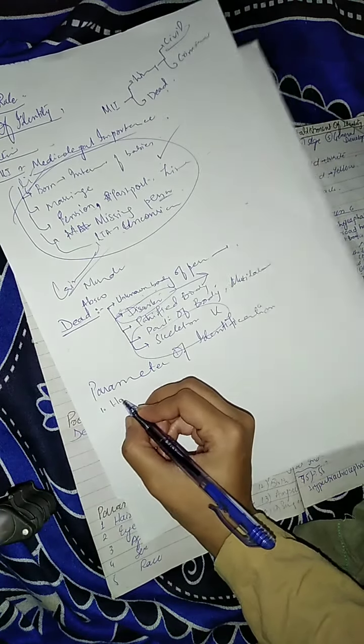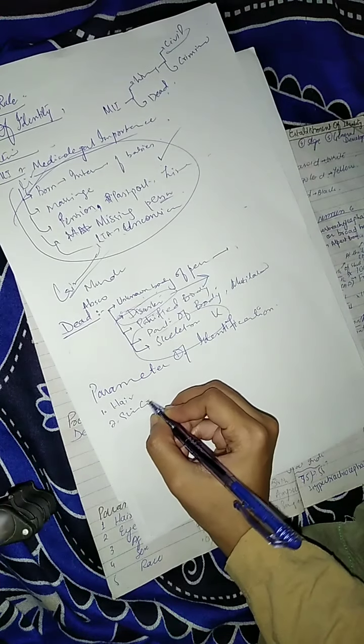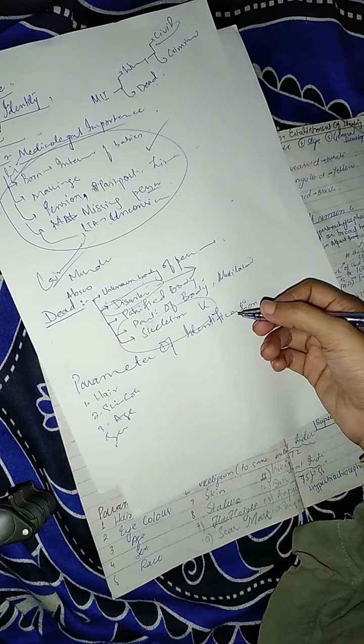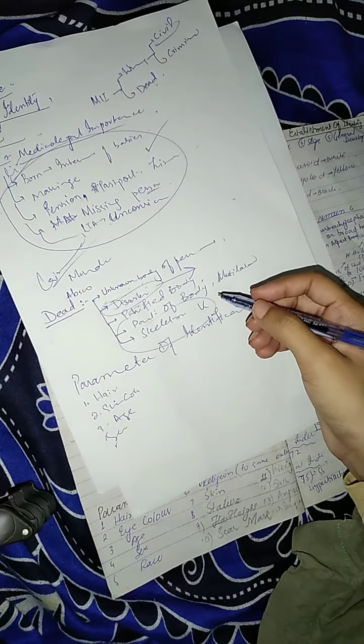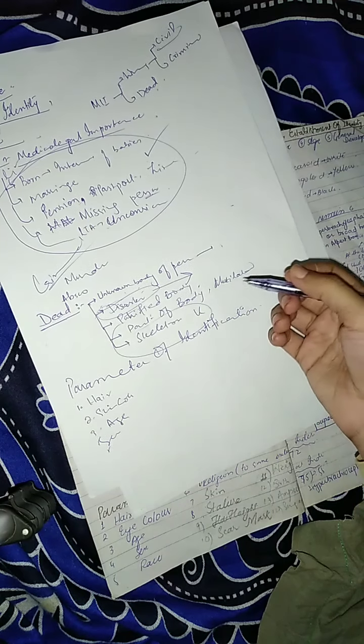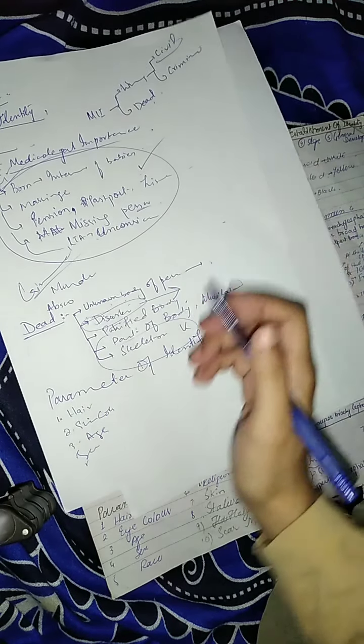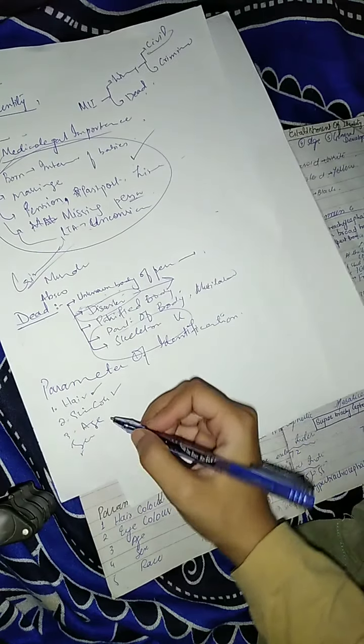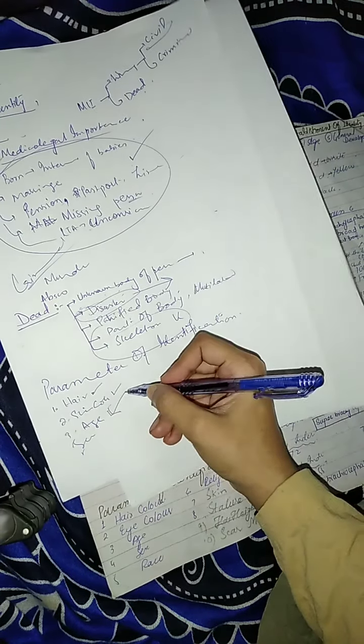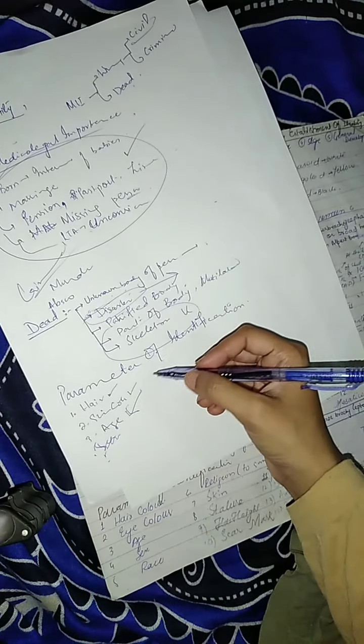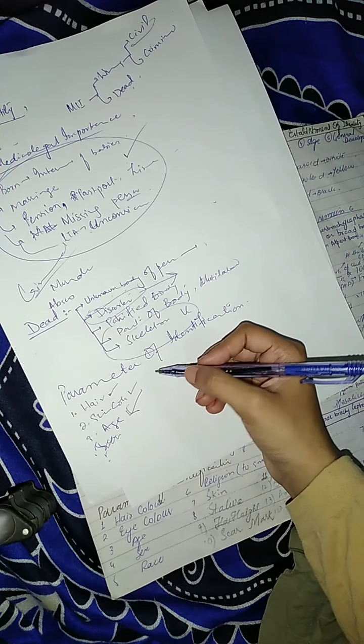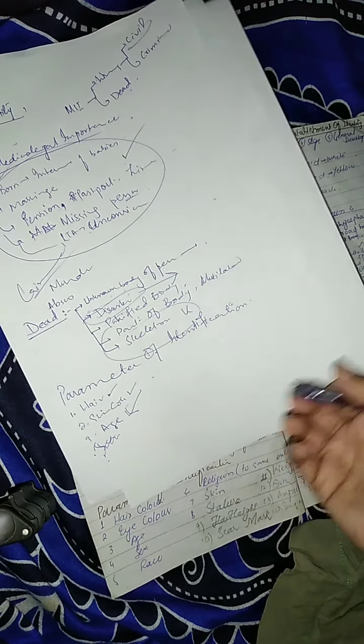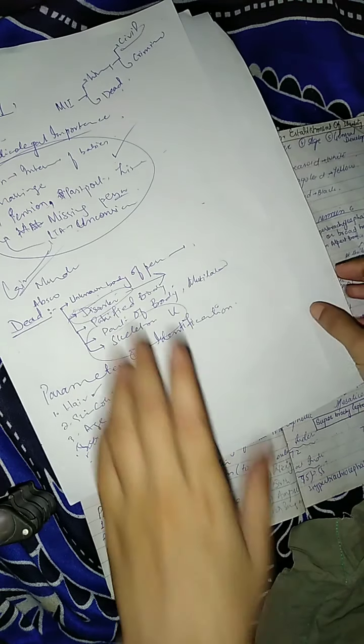It is obvious if we have a skeleton, then we have a standard skeleton. So what are the parameters? We will know the identification. So we will find a lot more in your book: hair, skin, color, age, sex, race, stature, religion, height, scar, mass, weight. You will start with hair, skin color, then age, sex, race, stature, weight. You have to remember the technique.